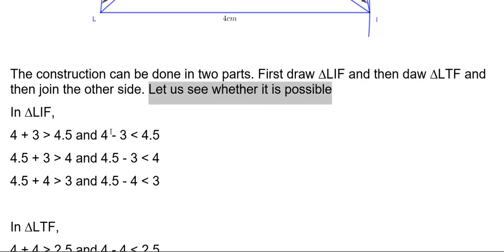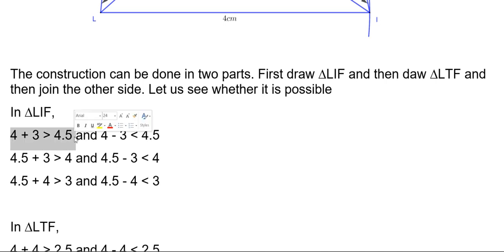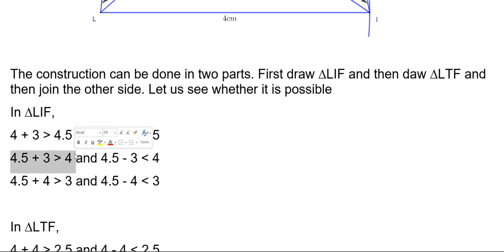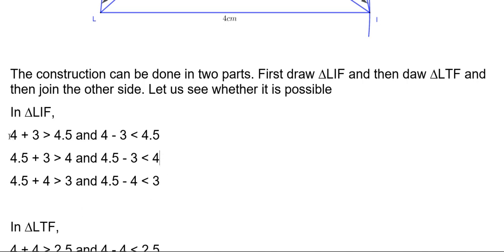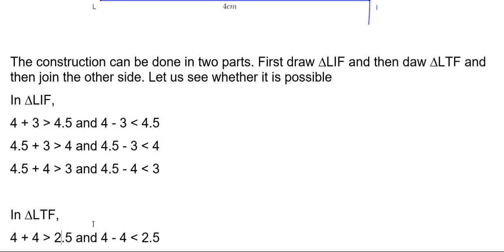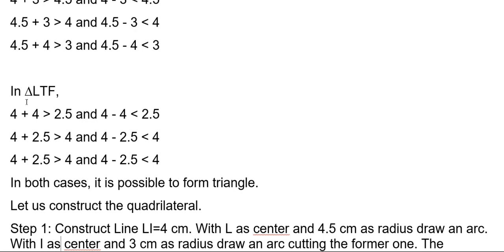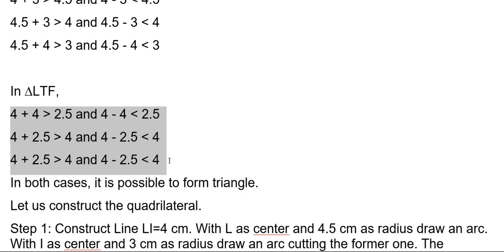Let us check whether it is possible or not. In triangle LIF, the triangle rule states: the sum of two sides is always greater than the third side. So: 4 + 3 > 4.5, 4.5 + 3 > 4, and 4.5 + 4 > 3. Also 4.5 − 4 < 3 and 4.5 − 3 < 4. In triangle LTF: 4 + 4 > 2.5, 4 + 2.5 > 4. In both cases, it is possible to form the triangle.